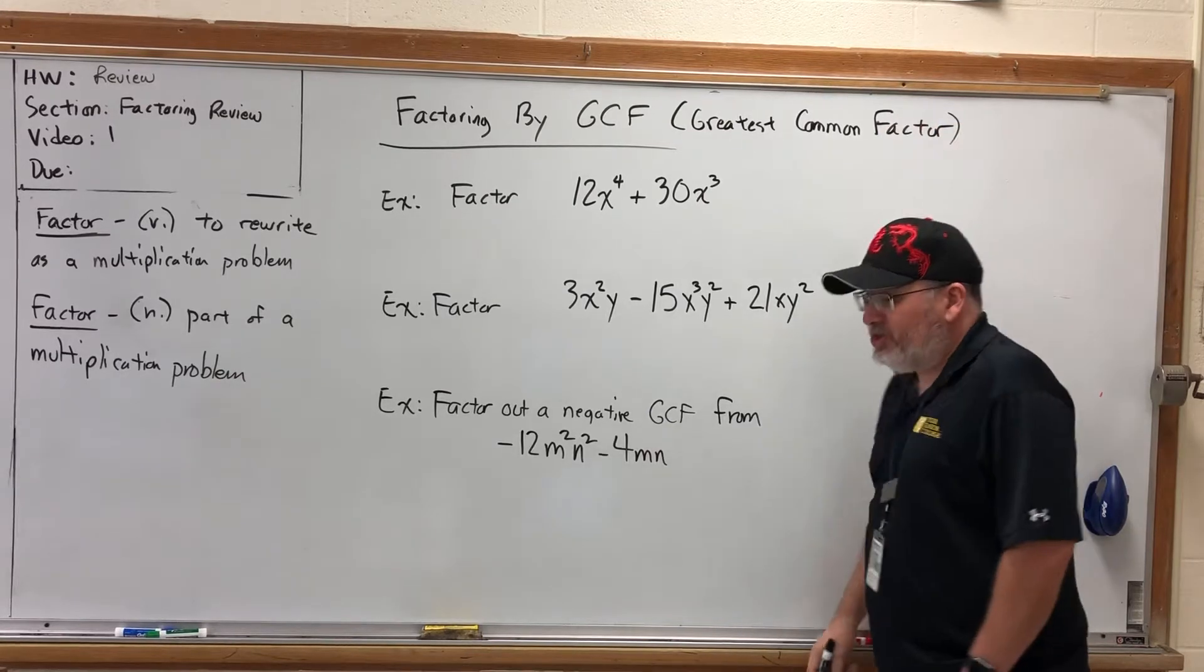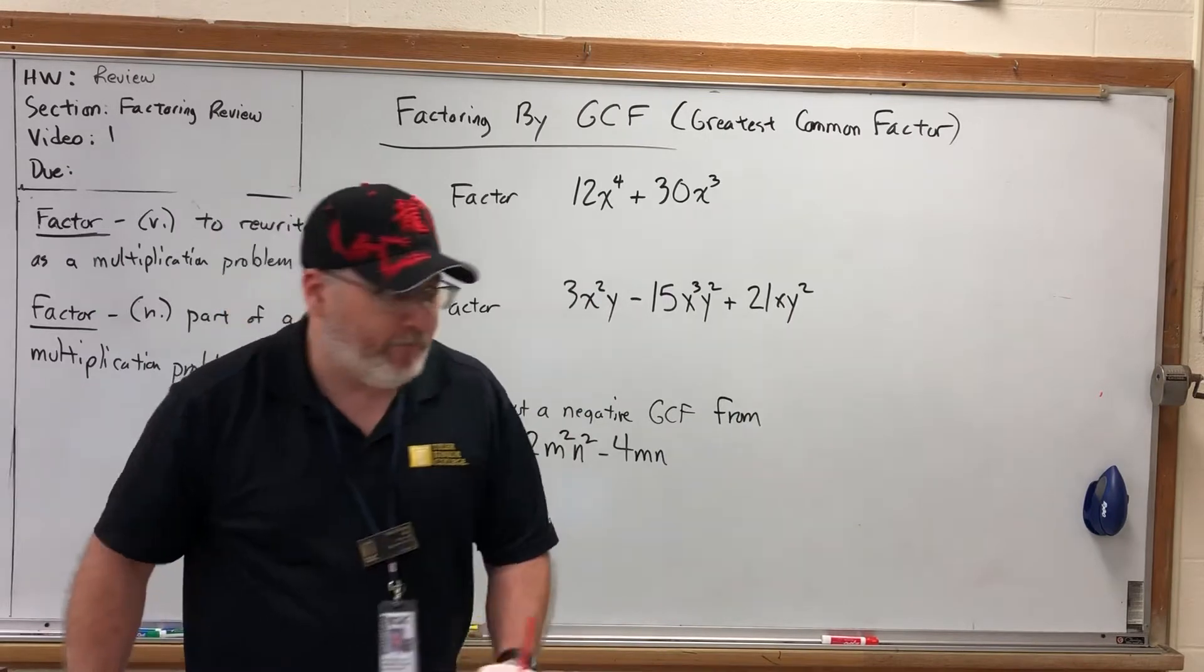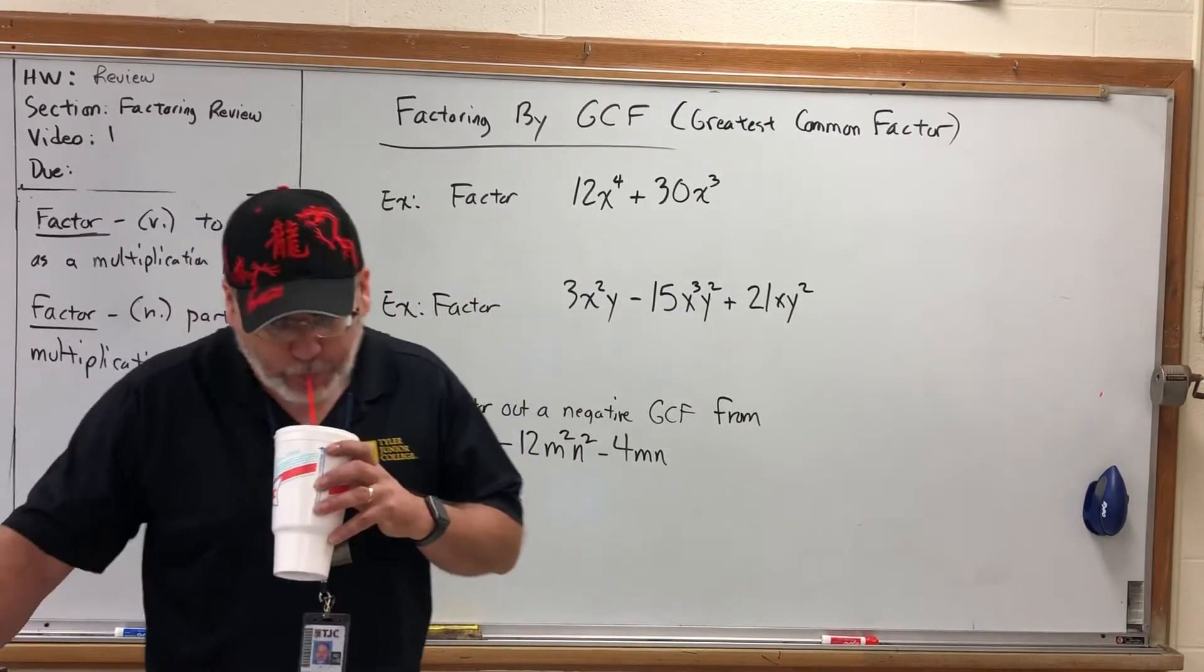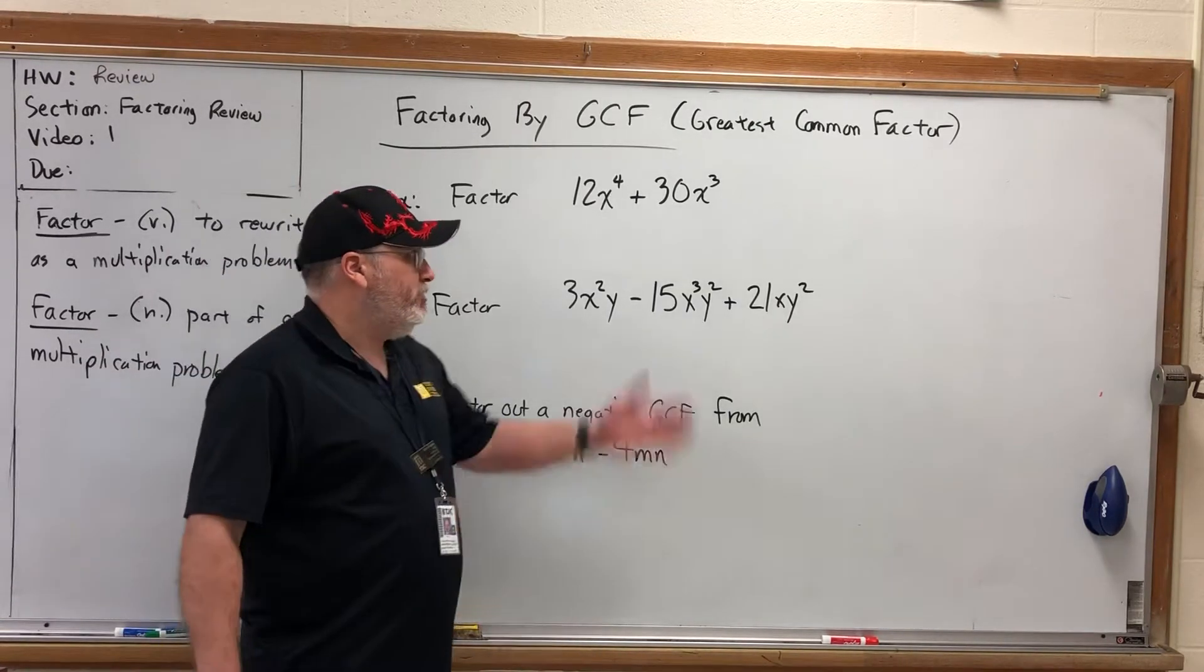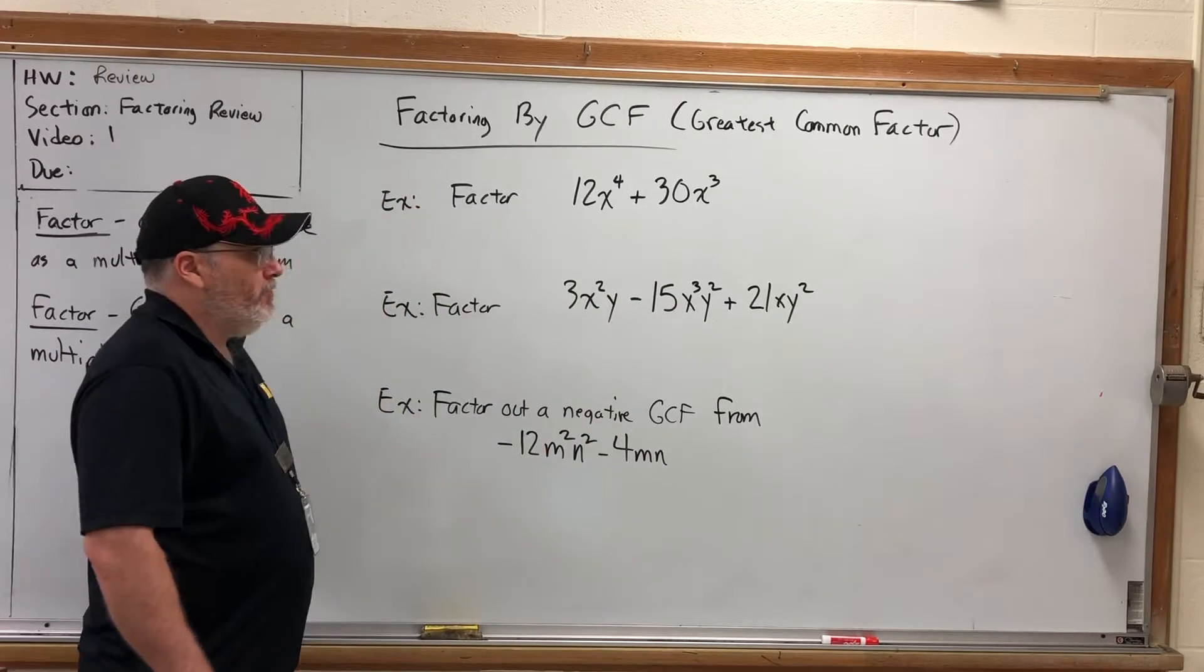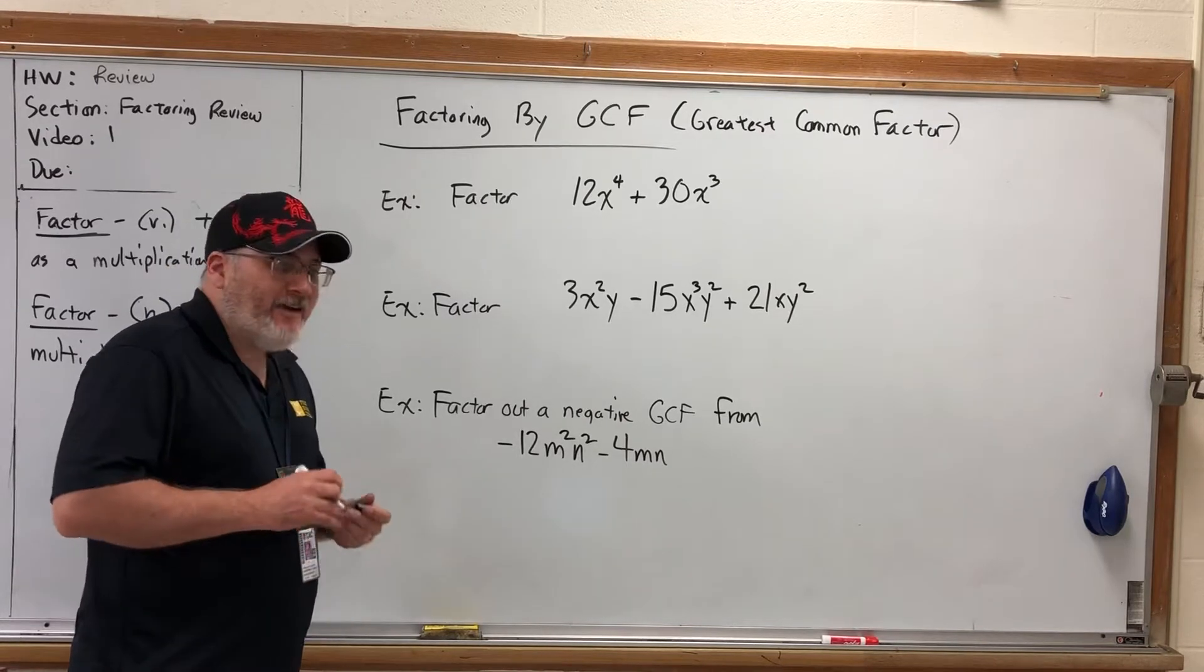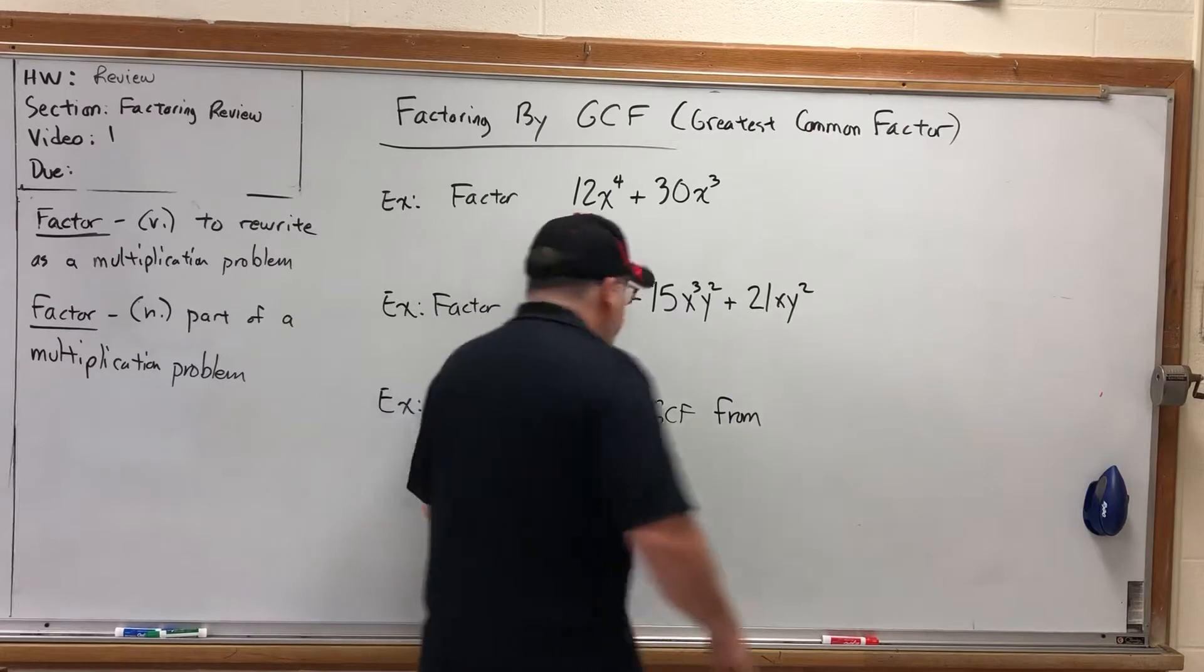Essentially, factoring by GCF is doing the distributive property backwards. Somebody did the distributive property and we got an answer. I would like to recover what the original problem was. Technically speaking, there's an infinite number of ways that you can distribute to get a particular result, but only one way that involves the greatest common factor. In other words, what was the greatest factor that could have been distributed to get the expression that you're given?